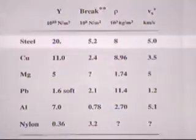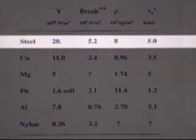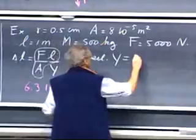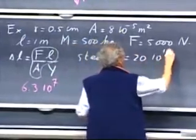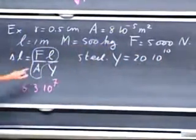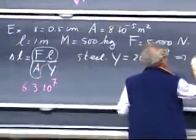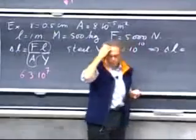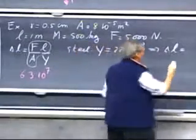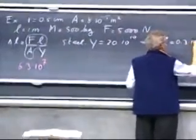And so now we can look at steel as an example. So we take steel. Y is 20 times ten to the tenth newtons per square meter. And we substitute that in here, and we find that we get an extension delta L, which I believe is only a third of a millimeter. 0.3 millimeters.